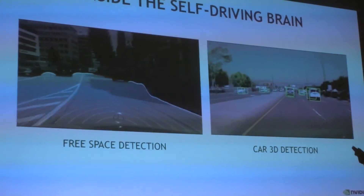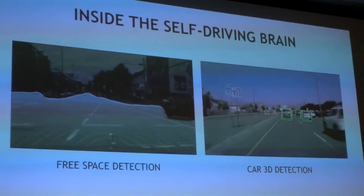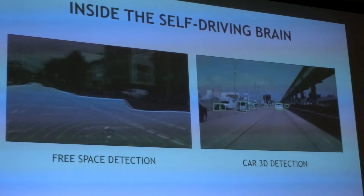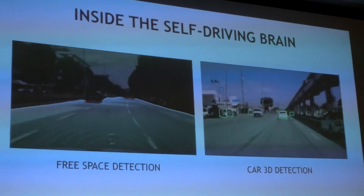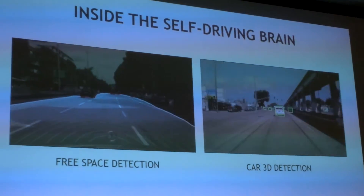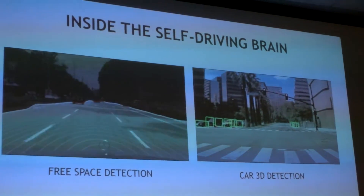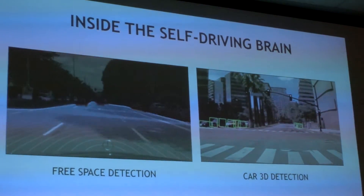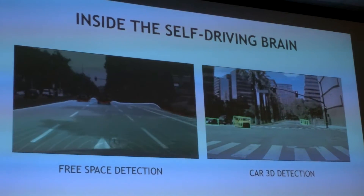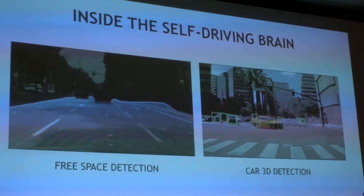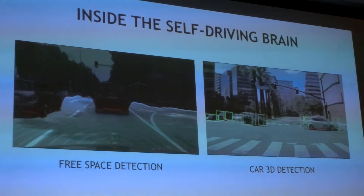What we've done is trained some of these neural networks to take the video from the front-facing camera. On the left, it's what we call free space detection, or our neural net that we call our open road net. Essentially, we've created a system where it understands where the open road is — where it is safe to drive.